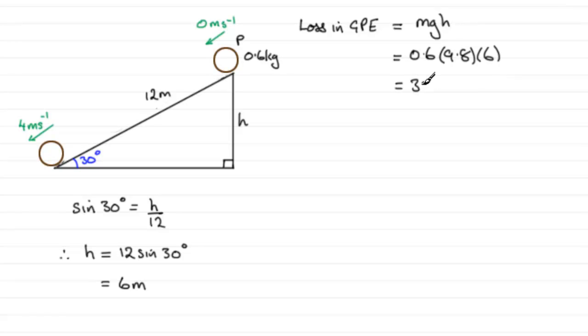Now the next energy change is going to be that of kinetic energy. What we've got here is no kinetic energy at the top because it's at rest, but it gains kinetic energy as it slides down the plane. Kinetic energy is given by half mv squared.